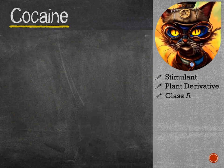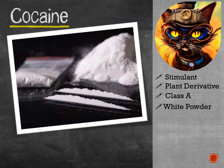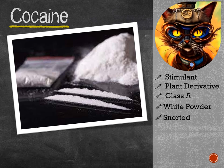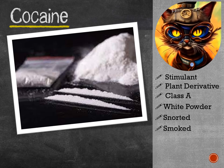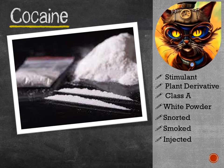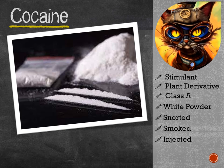Cocaine usually appears as a white powder and can be ingested in various ways. The most common methods include snorting the powder through the nose, smoking it as crack cocaine, a solid crystal form of cocaine, or injecting it into the bloodstream.